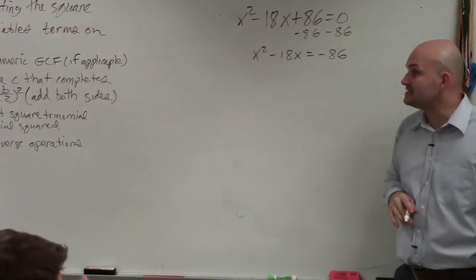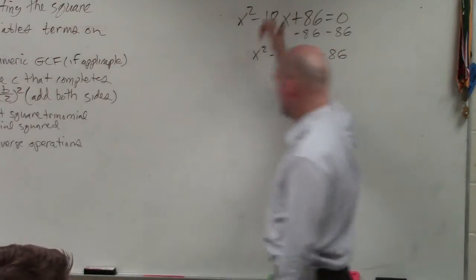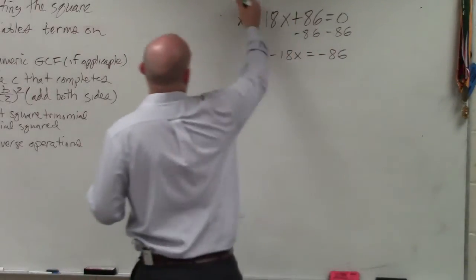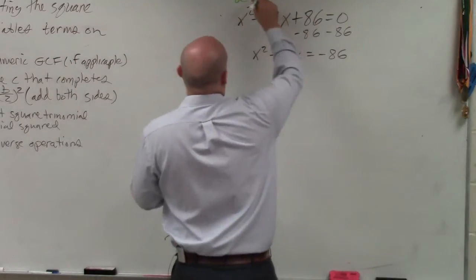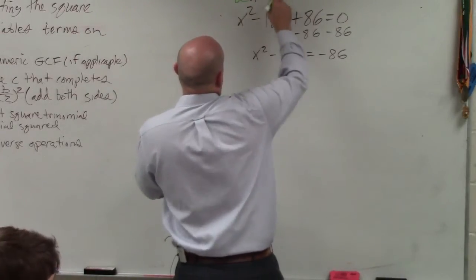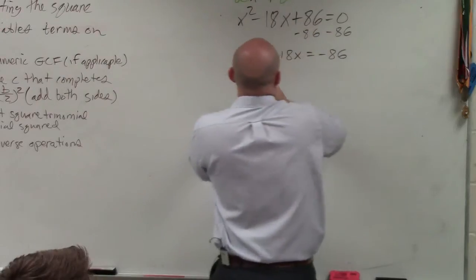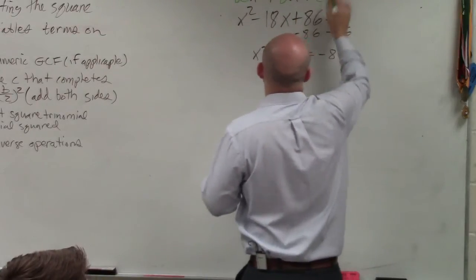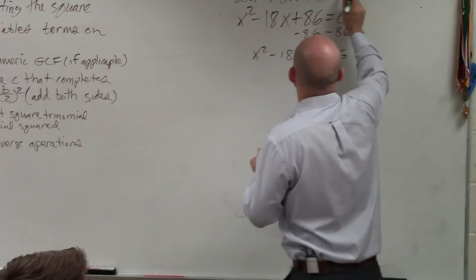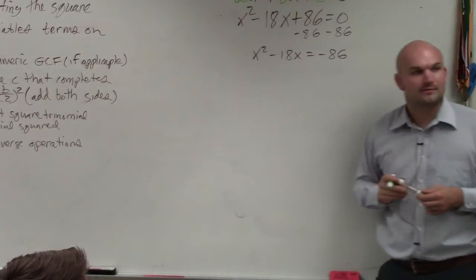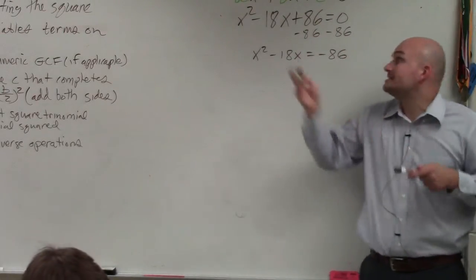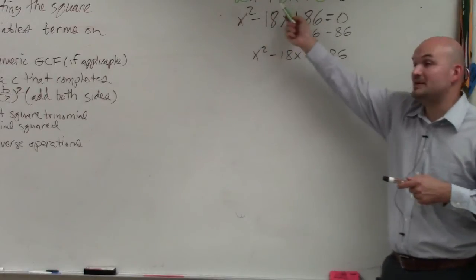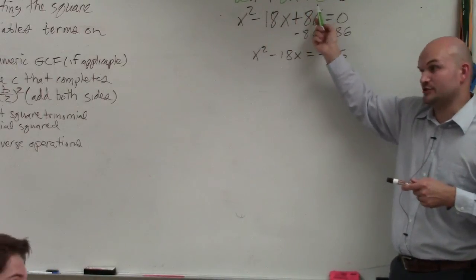Find the value c that completes the square. So remember, ax squared plus bx plus c equals 0. Remember that's part of the quadratic. a is the coefficient of your x squared. b is your coefficient of your x. And c is your constant.